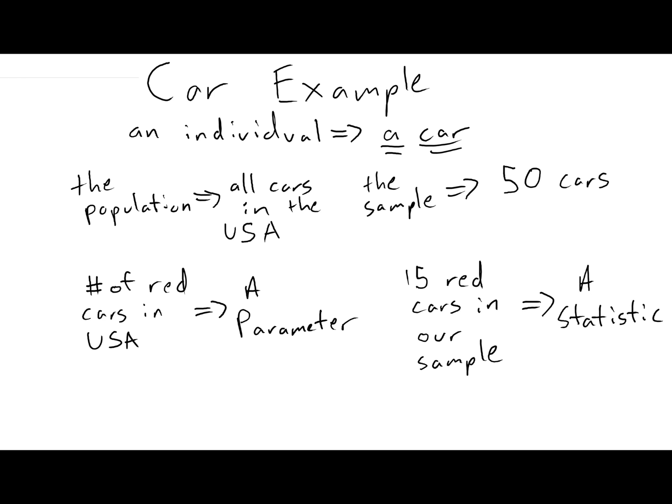So to review some of the vocabulary we just learned with the car example, a car itself would be what's known as an individual. It's what we're collecting data on. And our population is every single car that we're interested in, which would be all the cars in the United States. The sample are the cars that we actually collected data on, which would be those 50 cars. And so the number of red cars in our population, the number of red cars in the United States is what's known as a parameter. And the 15 red cars in our sample is what's known as a statistic.